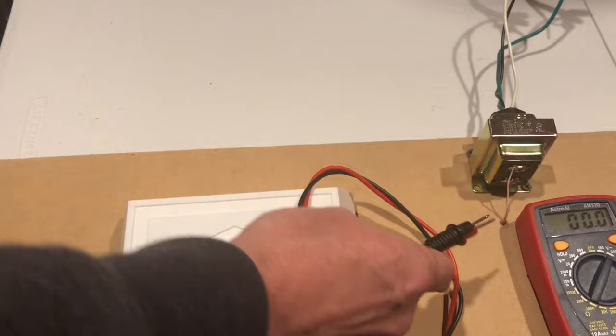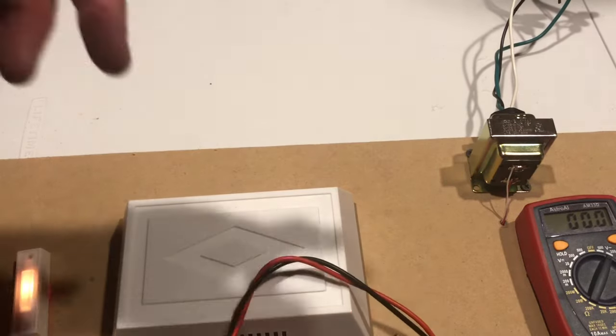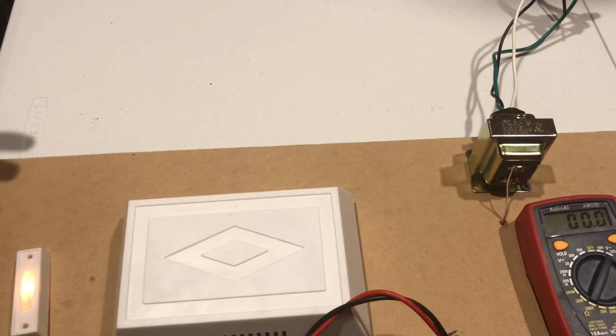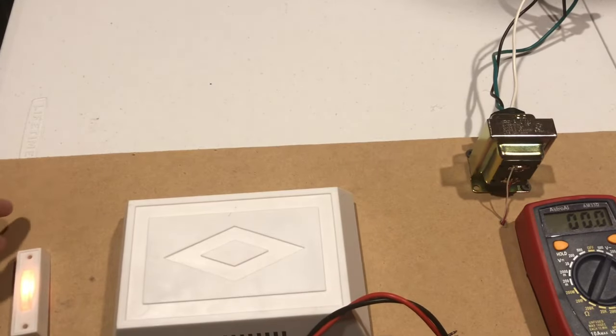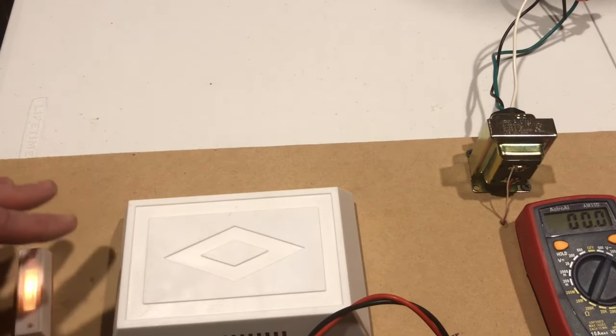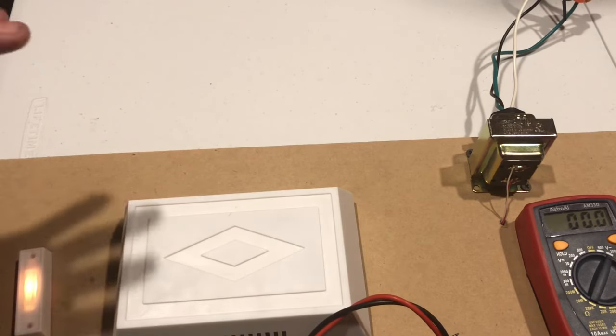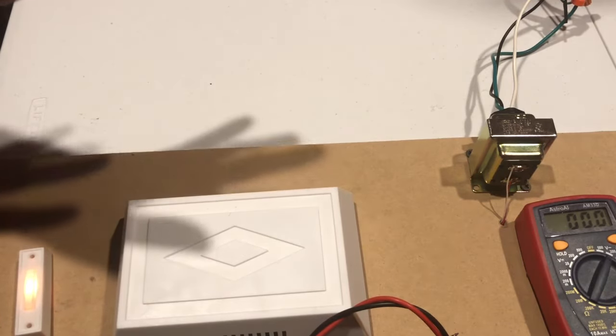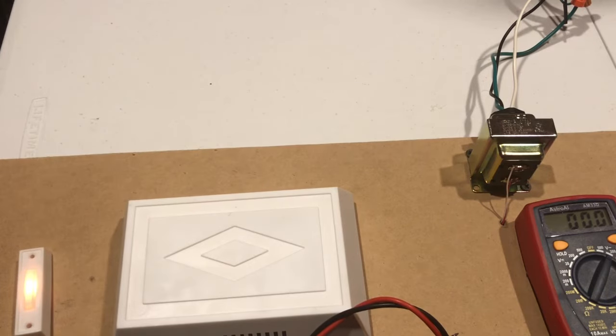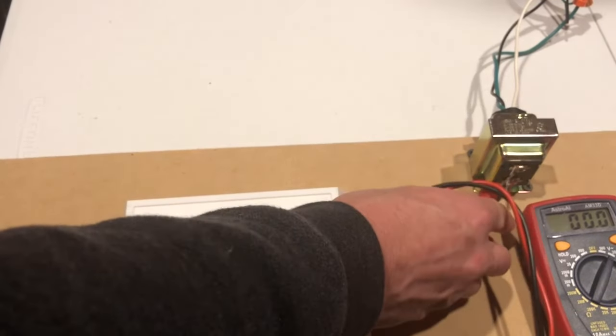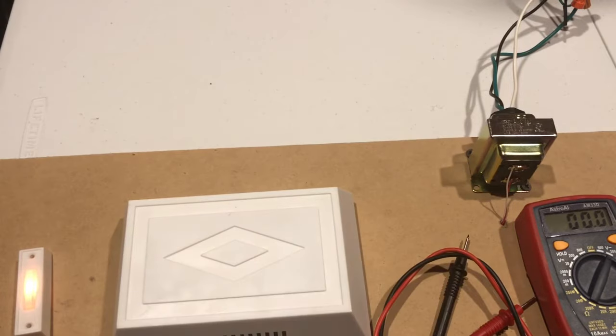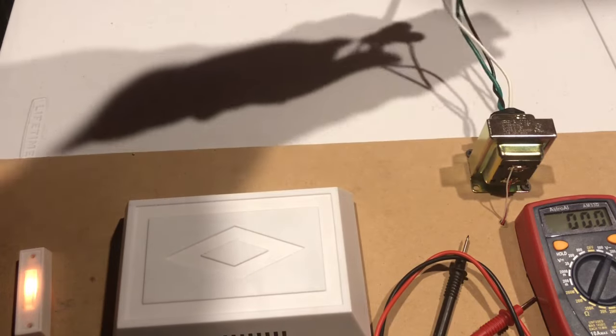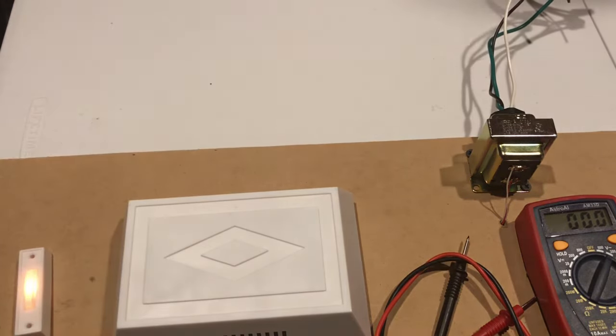...then we know we've got a bad transformer. Or if it's less than 16 volts, then chances are we've got a bad transformer. Unless we're using just a regular doorbell, then you could probably go down to about 10 volts and be fine. But if you're using one of the video doorbells, or if you're getting zero off of this transformer, it means it's bad if you have 120 volts at the transformer that's feeding the transformer, which we did.